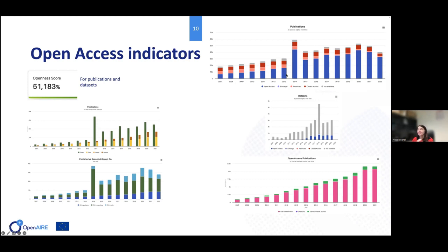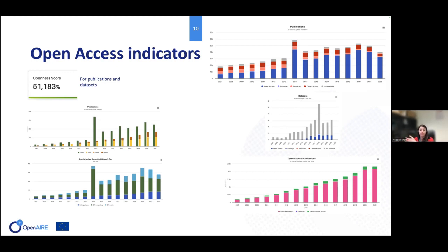We can also show a chart with publications over time by access type — similar to the open access route chart, but here we also see how open access increases relative to closed access or embargo. The same can be done for datasets. We can also go into the details of the venue and business model: whether publications are in a full open access gold journal with article processing charges, a diamond journal without article processing charges, or a transformative journal.